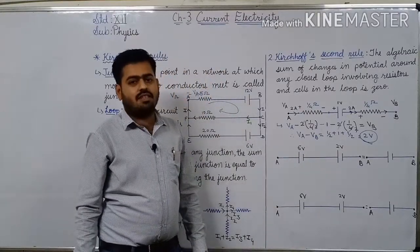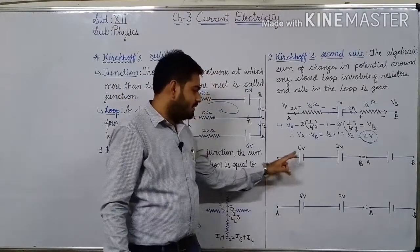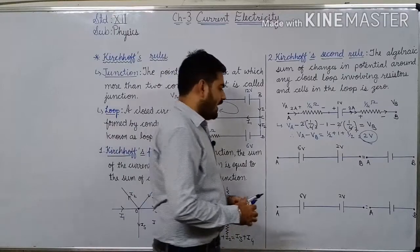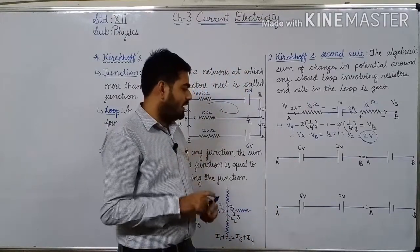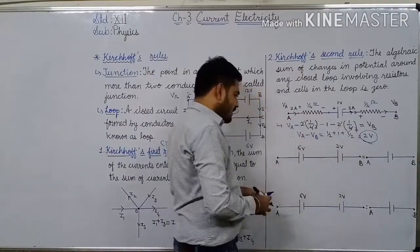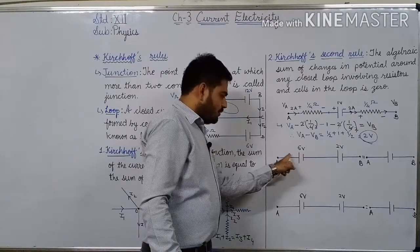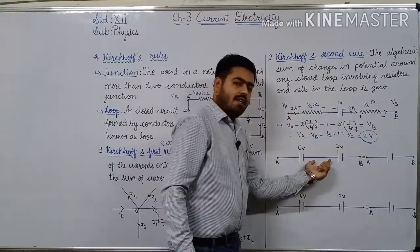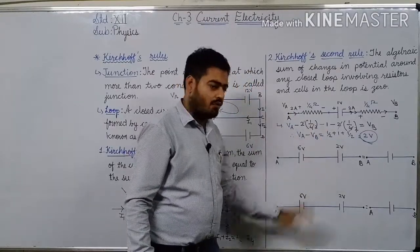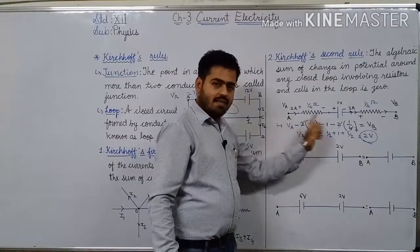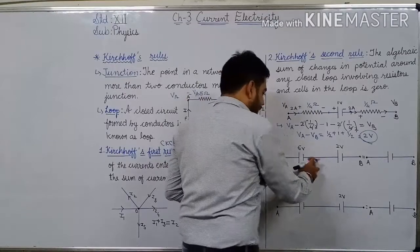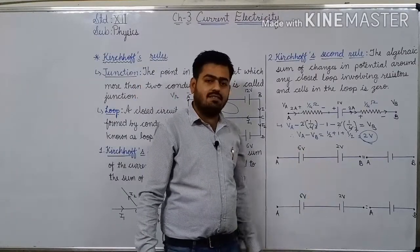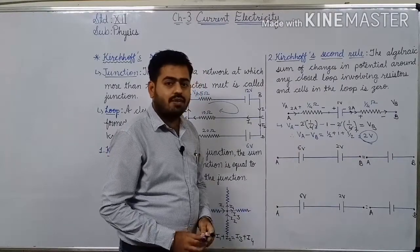Two cells are connected in series. This is E1, this is E2 — positive, negative, positive, negative. This is called the helping condition because both batteries drive current in the same direction. The equivalent EMF when cells are connected in series is E1 + E2 = 6 + 2 = 8 volt.